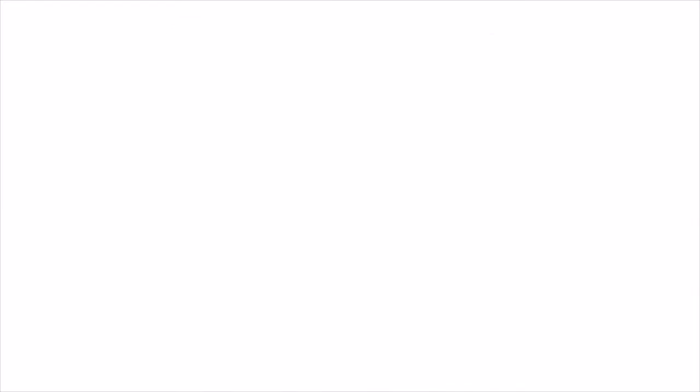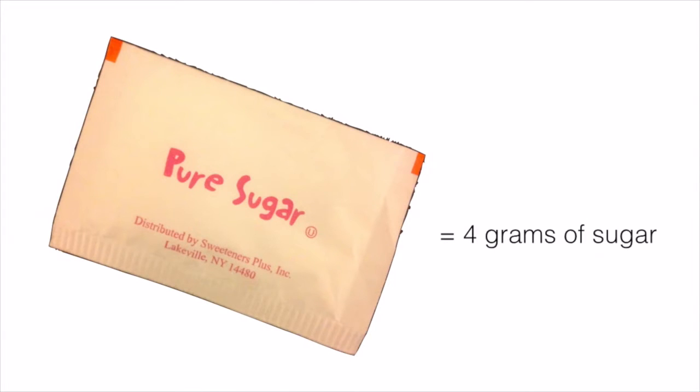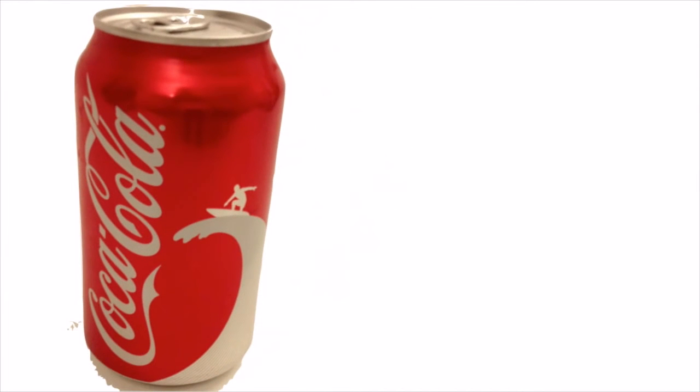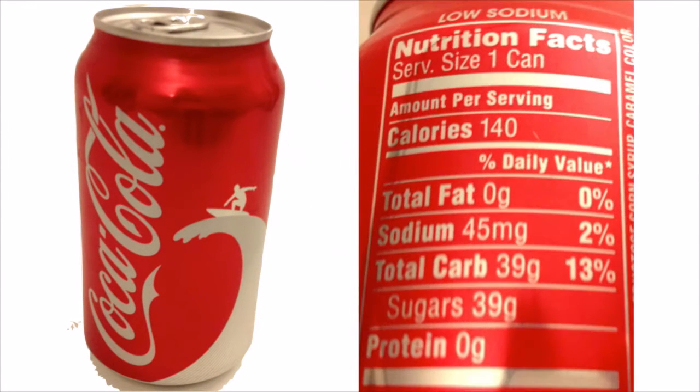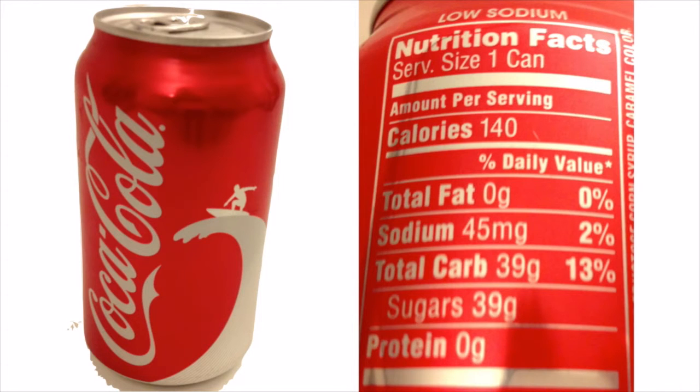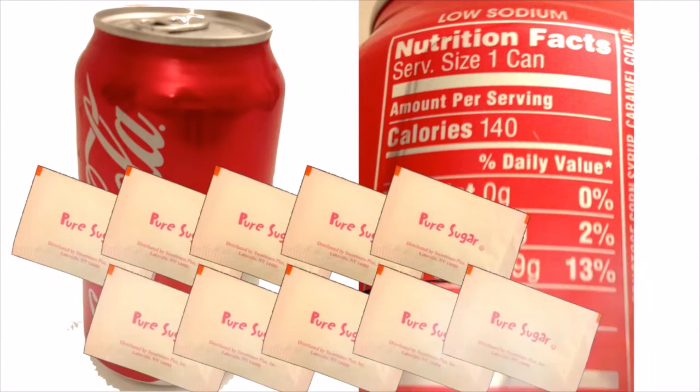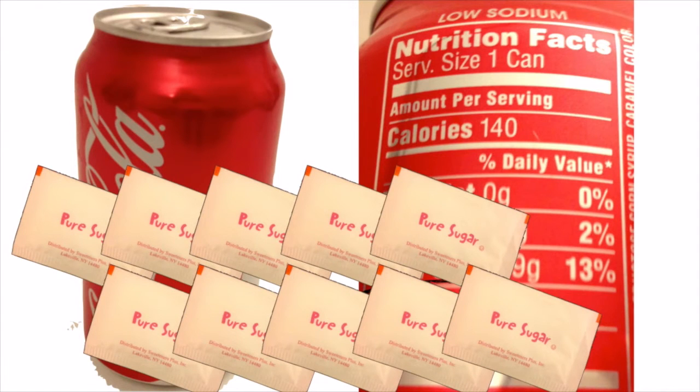But the truth of the matter is, these 4 grams of sugar we have just added to our coffee are nothing compared with other sources of hidden sugar that we may be eating every day without even realizing it. For example, this can of Coke contains 39 grams of added sugar. It's as if instead of adding 1 sugar packet to your coffee, you had added 10 sugar packets to this serving of soft drink. But because you didn't add them yourself, you may not realize how much sugar you're getting from this single can.